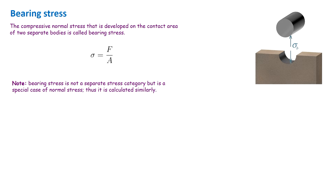The third type of stress is bearing stress. There are many cases in engineering applications where two separate bodies are in contact with each other, transferring force from one to another. Stress in such cases reflects the intensity of the force not internally within a body, but at the contact area between two separate bodies. Bearing stress has many applications in engineering because many structures are made of various components that are in contact with each other.